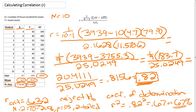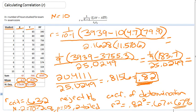So this is how you would go about calculating the basic R or the Pearson's correlation coefficient.